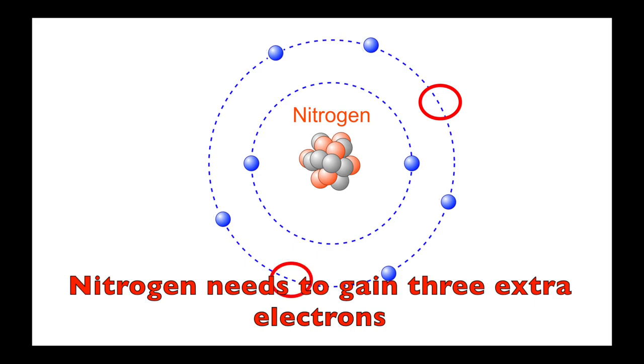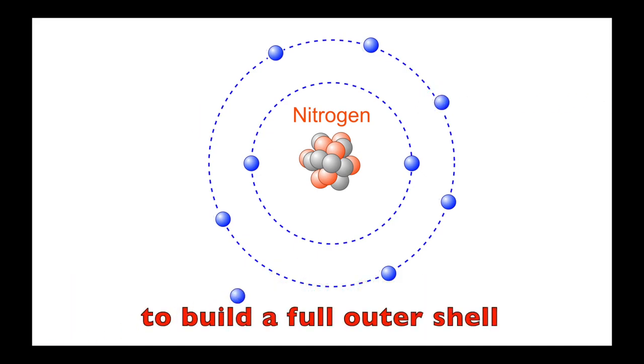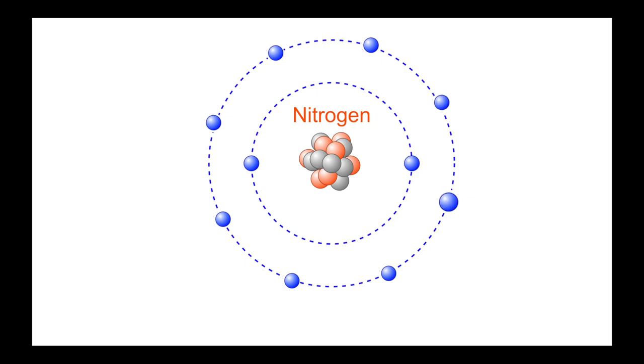Nitrogen needs to gain three extra electrons to build a full outer shell. It will develop a charge of minus three.